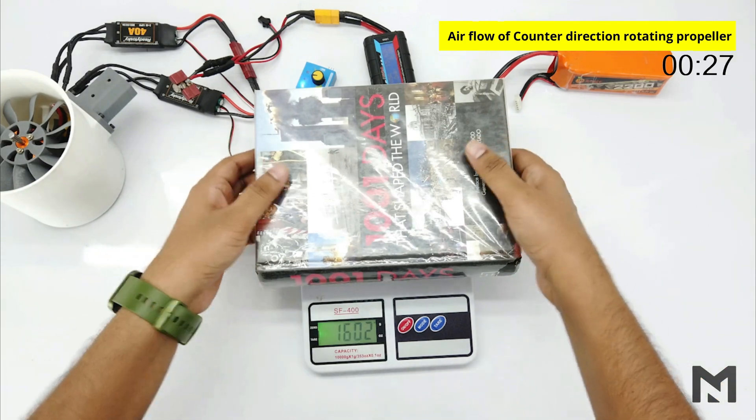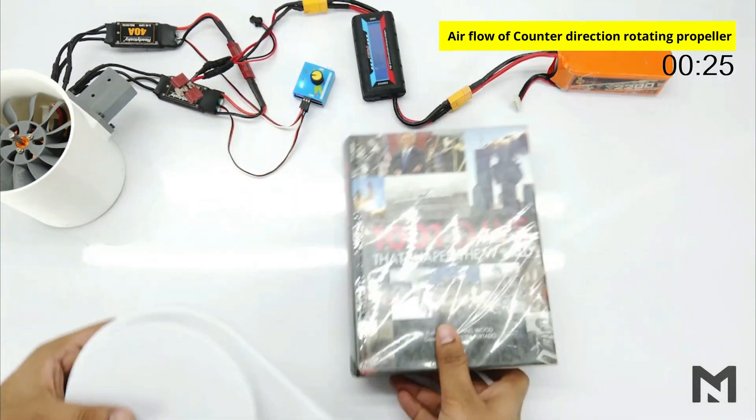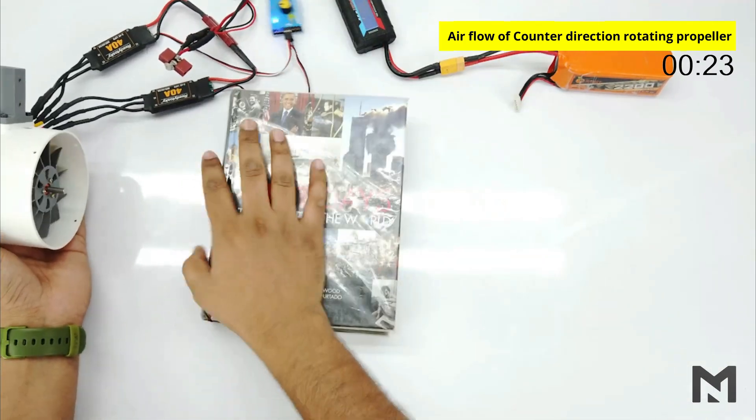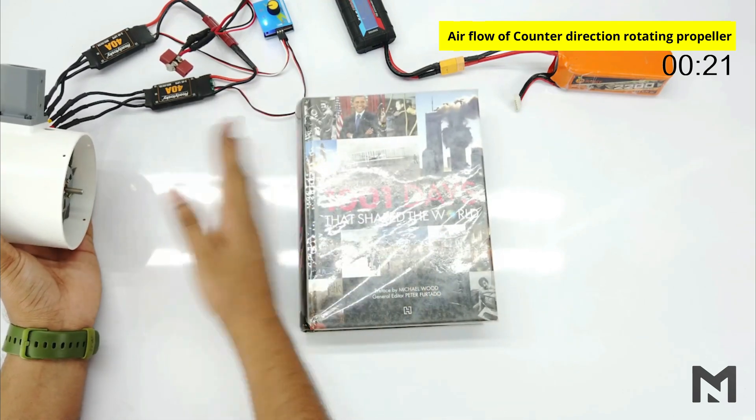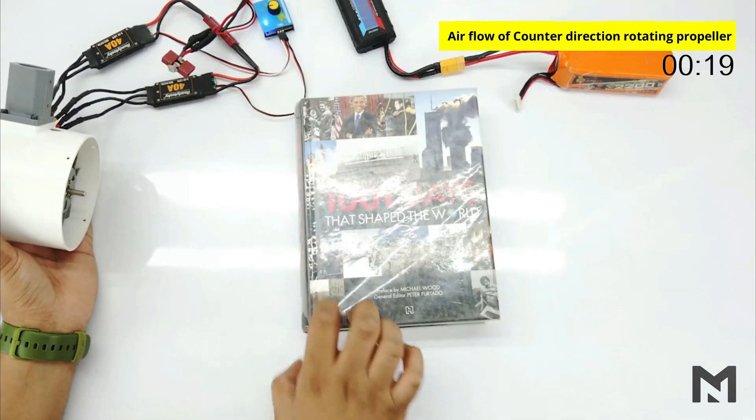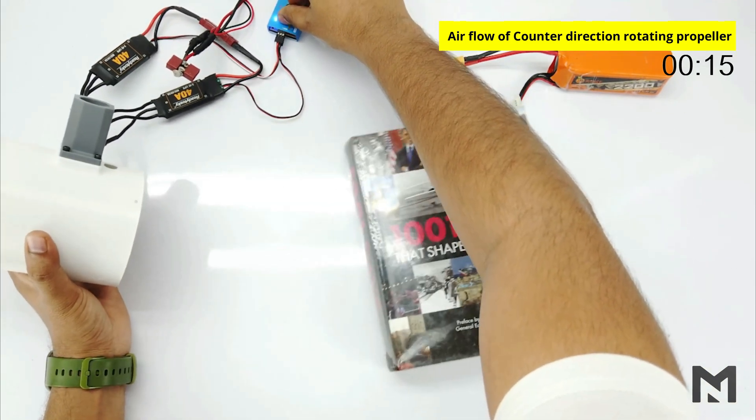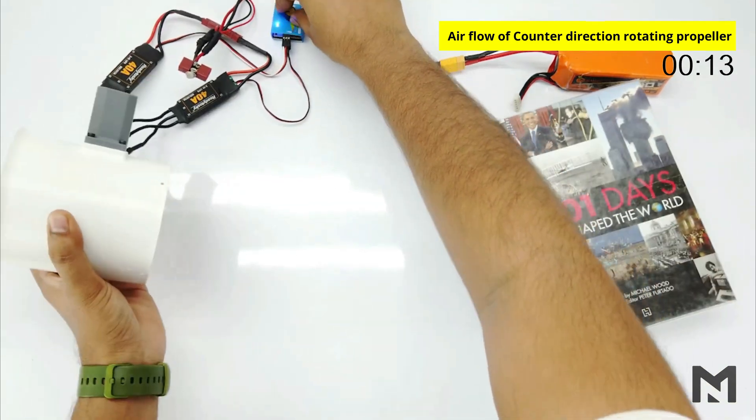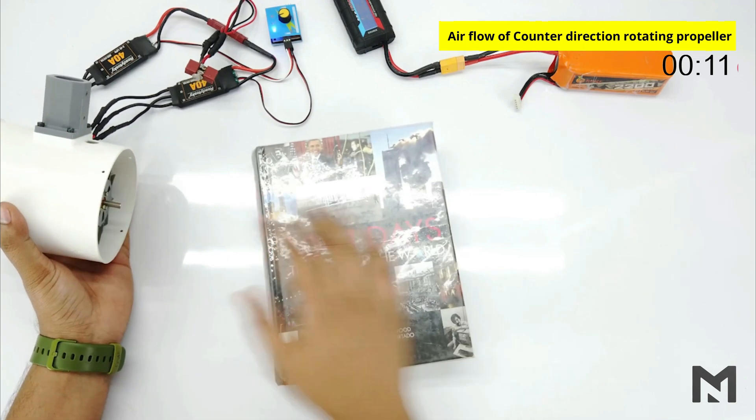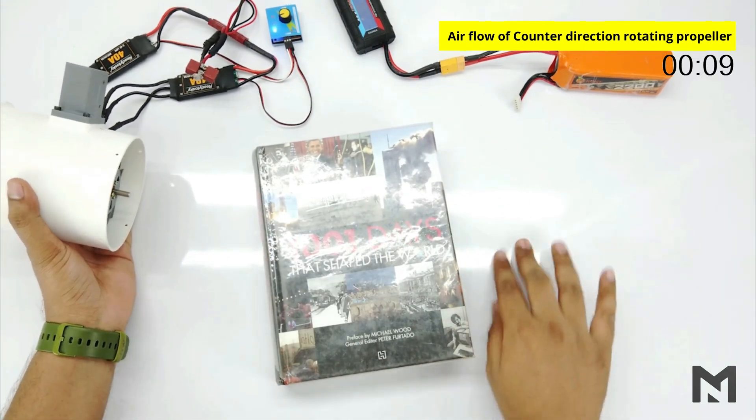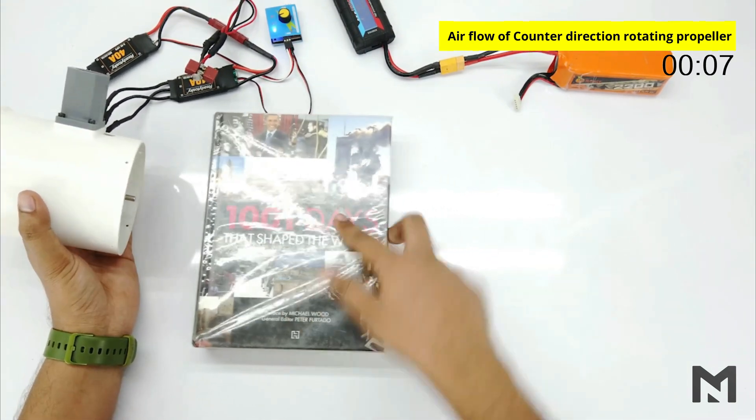Now I will use this book of approximately 1600 grams to check its power. This EDF will produce a high airflow rate since the angle of contact of the book is also less. But look at the result. Even the surface is a bit rough, it moved the book. And now let's check it one more time.